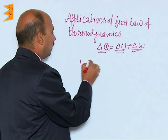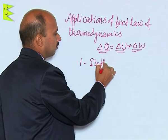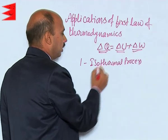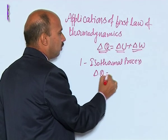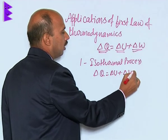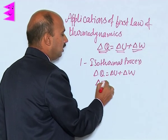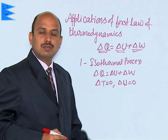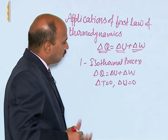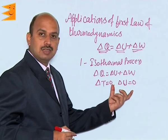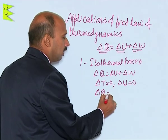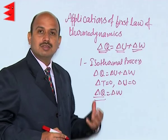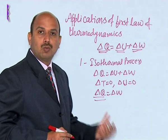The first application is the isothermal process. In isothermal process, delta Q is equal to delta U plus delta W, but here delta T is equal to 0, which means delta U is equal to 0. In isothermal process, temperature remains constant, so there is no change in internal energy. Therefore, delta Q is equal to delta W — whatever heat is supplied is spent entirely in doing work.